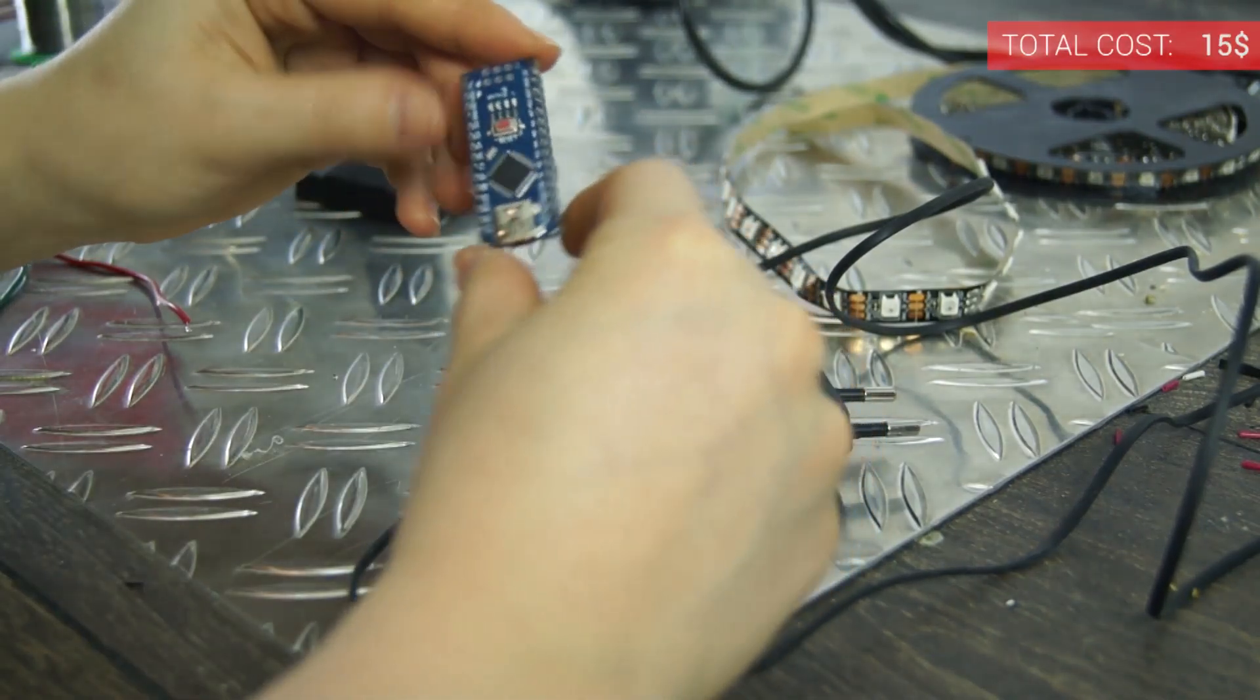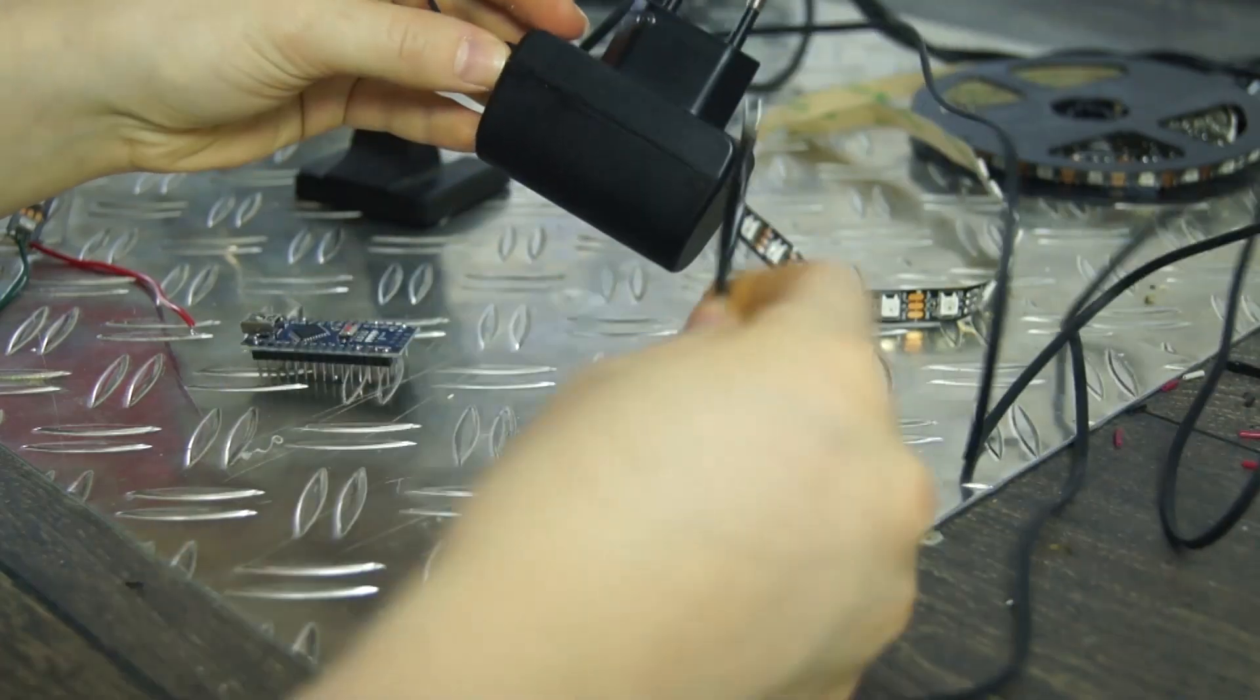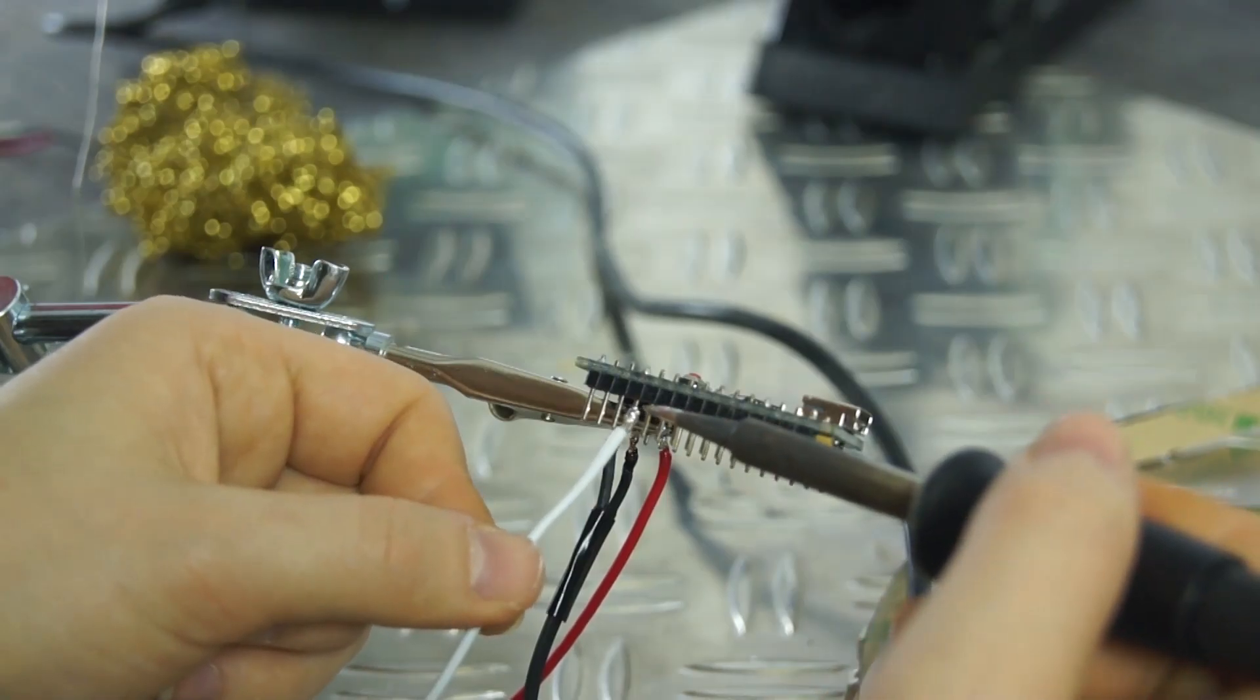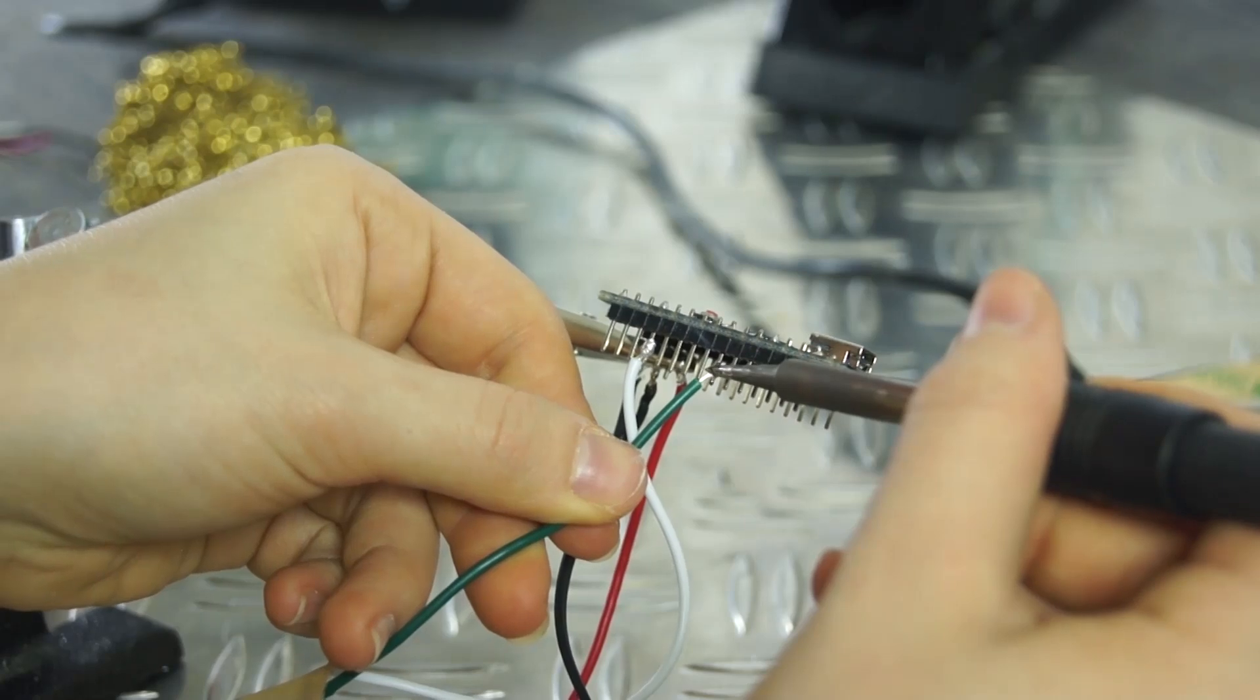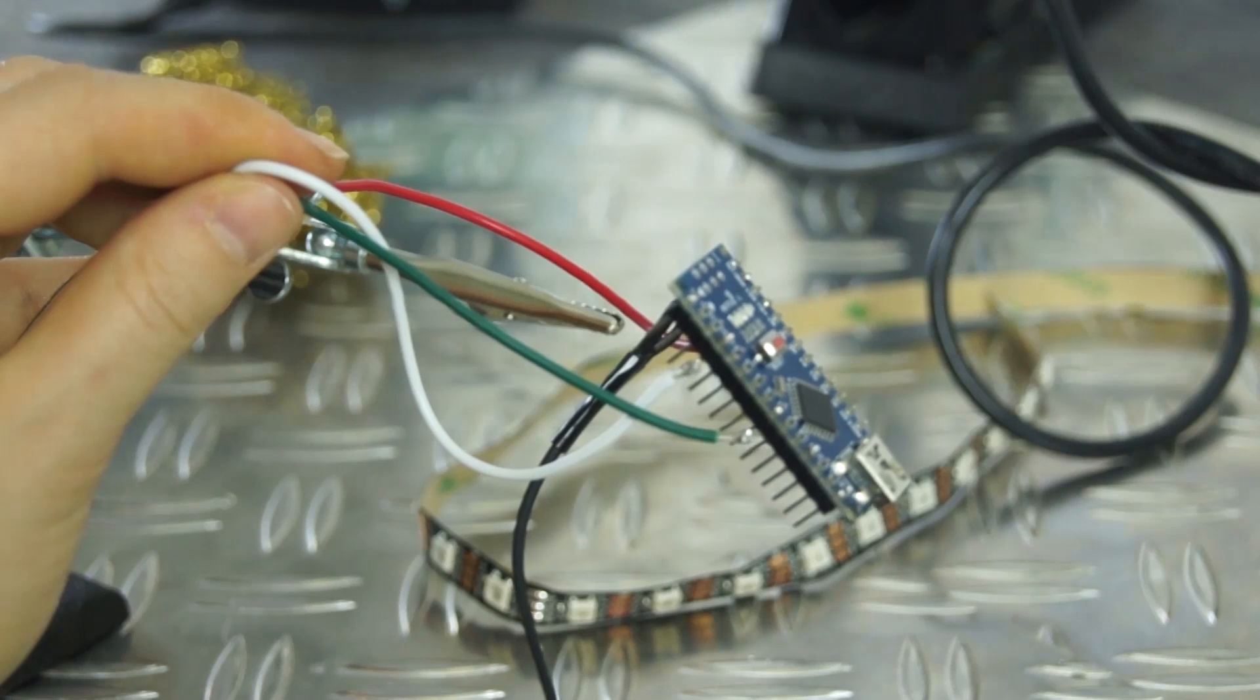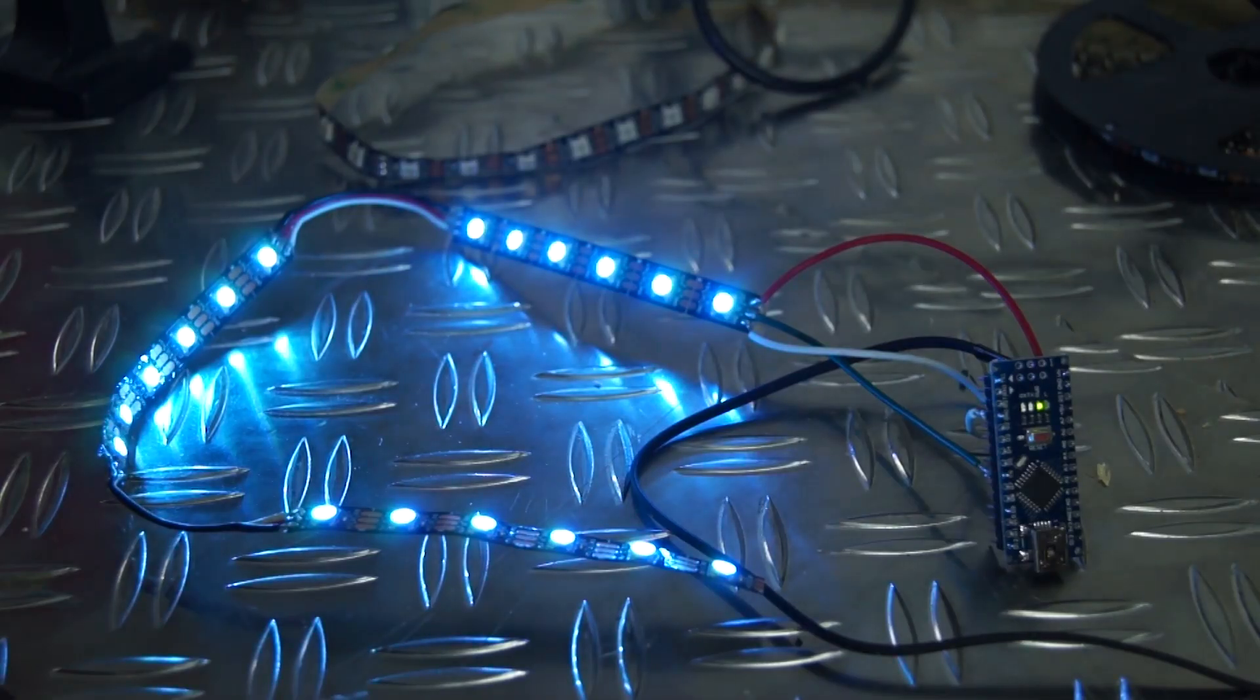Both the LED strip and the Arduino take a 5V input, so we can power the Arduino with this power supply and power the LED strip with the Arduino's 5V output pins. Once that was done, I connected the signal cable from the strip to the Arduino. The code was written using the FastLED library. I'll include the link to the library in the description below.